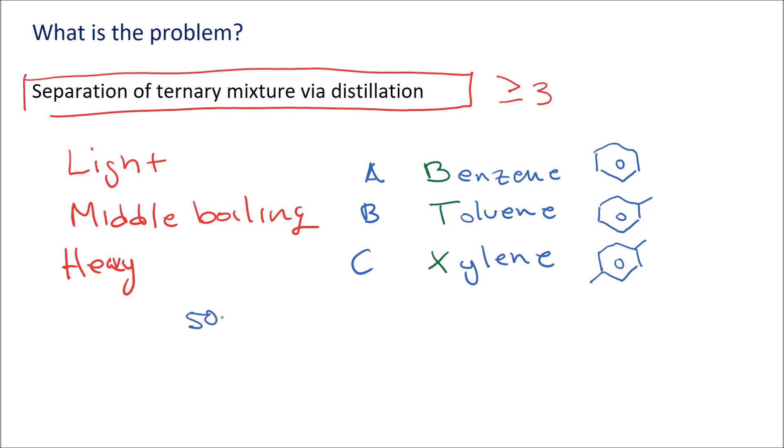If you just look at refining, about 50 to 60% of the energy at a refinery is used in distillation. So here we're talking about energy.